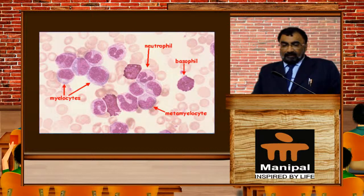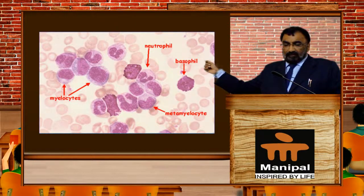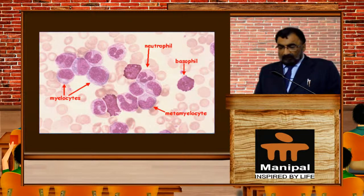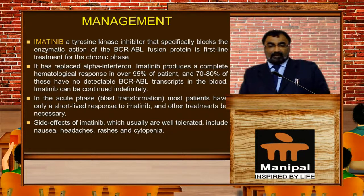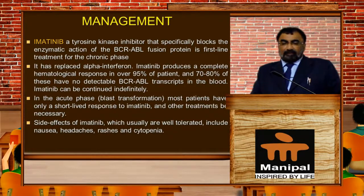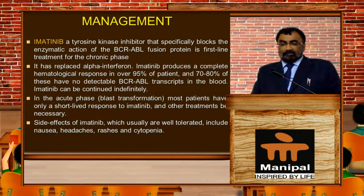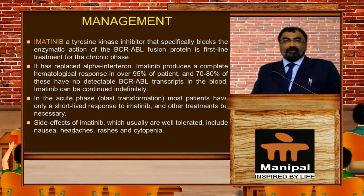In this picture you can see myelocytes, neutrophils, basophils, and metamyelocytes, which is again characteristic of chronic myeloid leukemia. Coming to the management of CML: Imatinib is the tyrosine kinase inhibitor that specifically blocks the enzymatic action of the BCR-ABL fusion protein, and is the first-line treatment of the chronic phase.